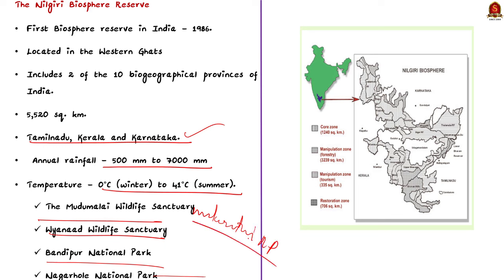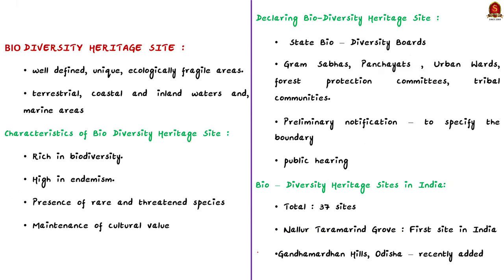Answering the question on Wayanad Wildlife Sanctuary: Statement 1 is correct — Wayanad Wildlife Sanctuary is part of the Nilgiri Biosphere Reserve. Statements 2 and 3 are incorrect because moist deciduous and semi-evergreen forests are mostly found there, and Wayanad Wildlife Sanctuary is bounded by Mudumalai National Park on the southeast (not northeast). The correct answer is option A — only one.